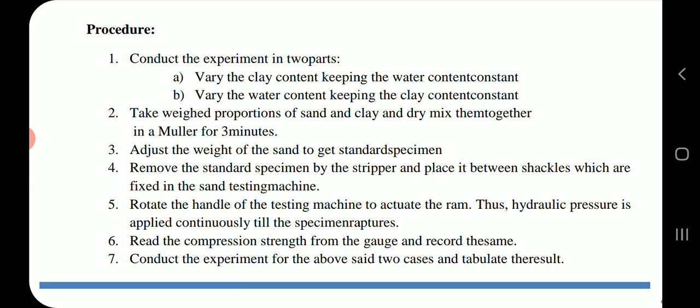Rotate the handle of the testing machine to actuate the ram. Hydraulic pressure is applied continuously till the specimen ruptures. Read the compression strength from the gauge and record the same. Conduct the experiment for the above two cases and tabulate the results.